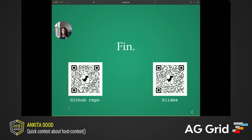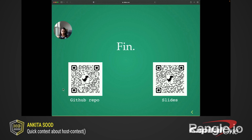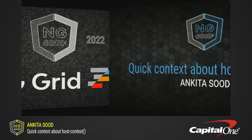That's all, folks. I hope you all now have a better understanding of this magical pseudo selector that is the host context and how well it works for styling Angular components. You can check out the code examples by scanning this QR code for the GitHub repo. You can also view the slides by scanning this QR code right here. Okay, thanks. Bye.